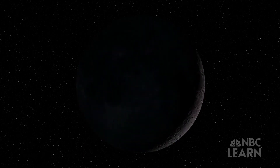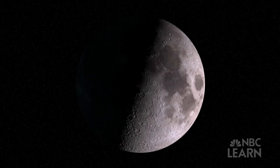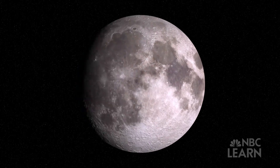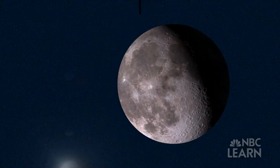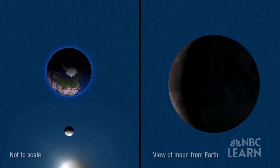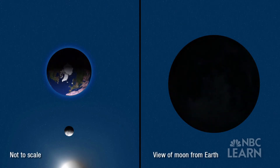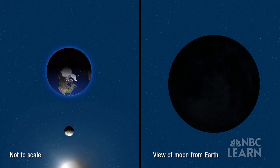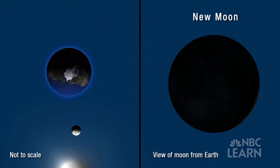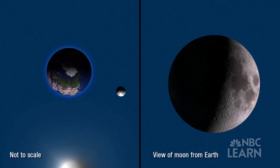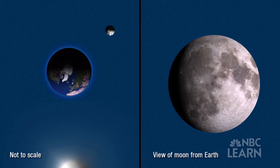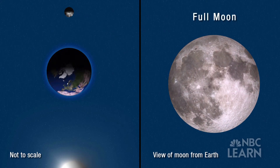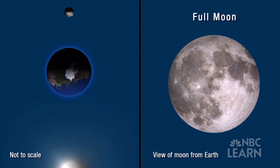Why do you think the shape of the Moon changes from a thin crescent, to a half circle, to a big bright ball of light, and then back again? When the Moon is between Earth and the Sun, the Sun lights up the half of the Moon that faces away from Earth. The side of the Moon facing Earth is dark — we call this phase a New Moon. When the Moon is on the opposite side of Earth from the Sun, we call that a Full Moon. During a Full Moon phase, the Sun lights up the half of the Moon that faces Earth.